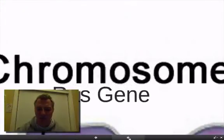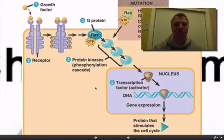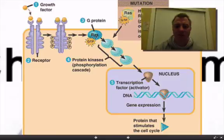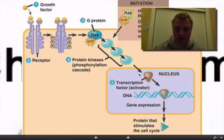Real quickly, the RAS gene: remember, you have these growth factors which will send a signal to this RAS protein, and the RAS protein will send a signal down a series of proteins — these protein kinases — a phosphorylation signal — until it reaches the nucleus of the cell.